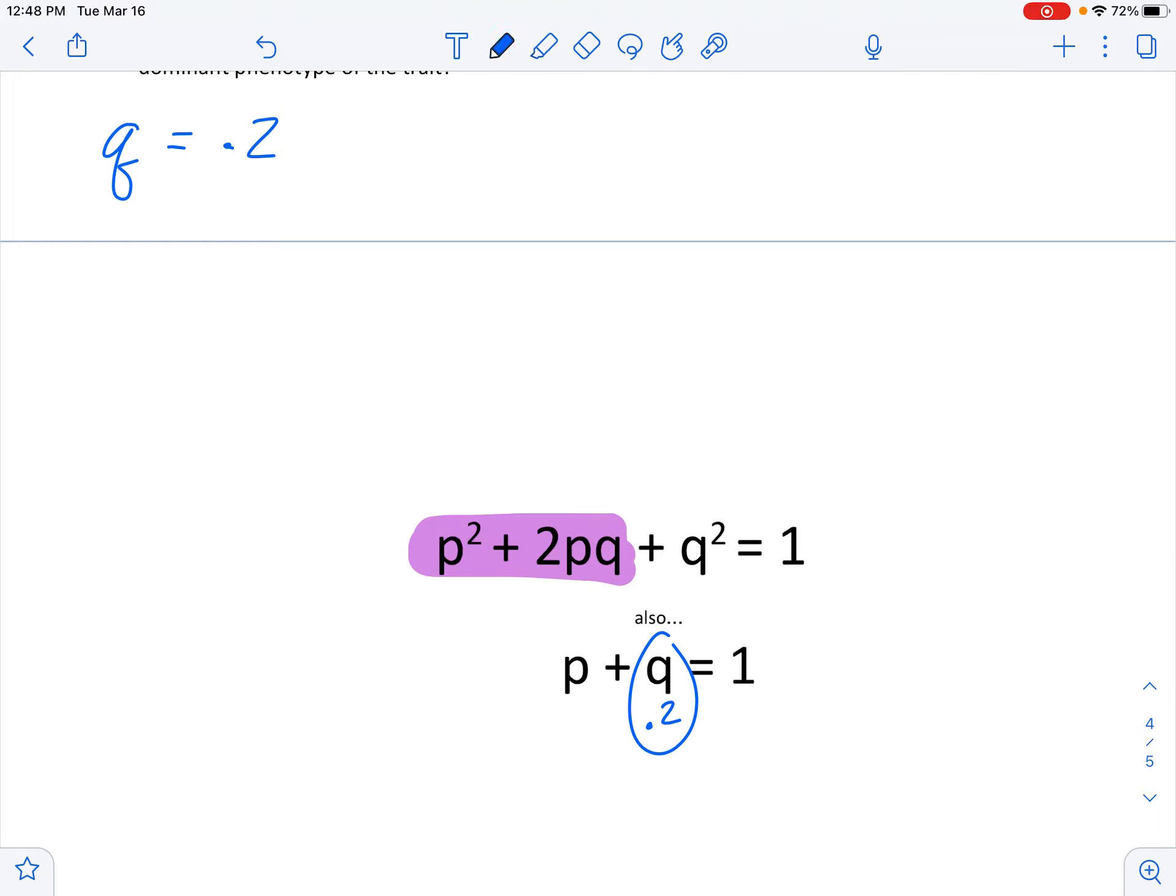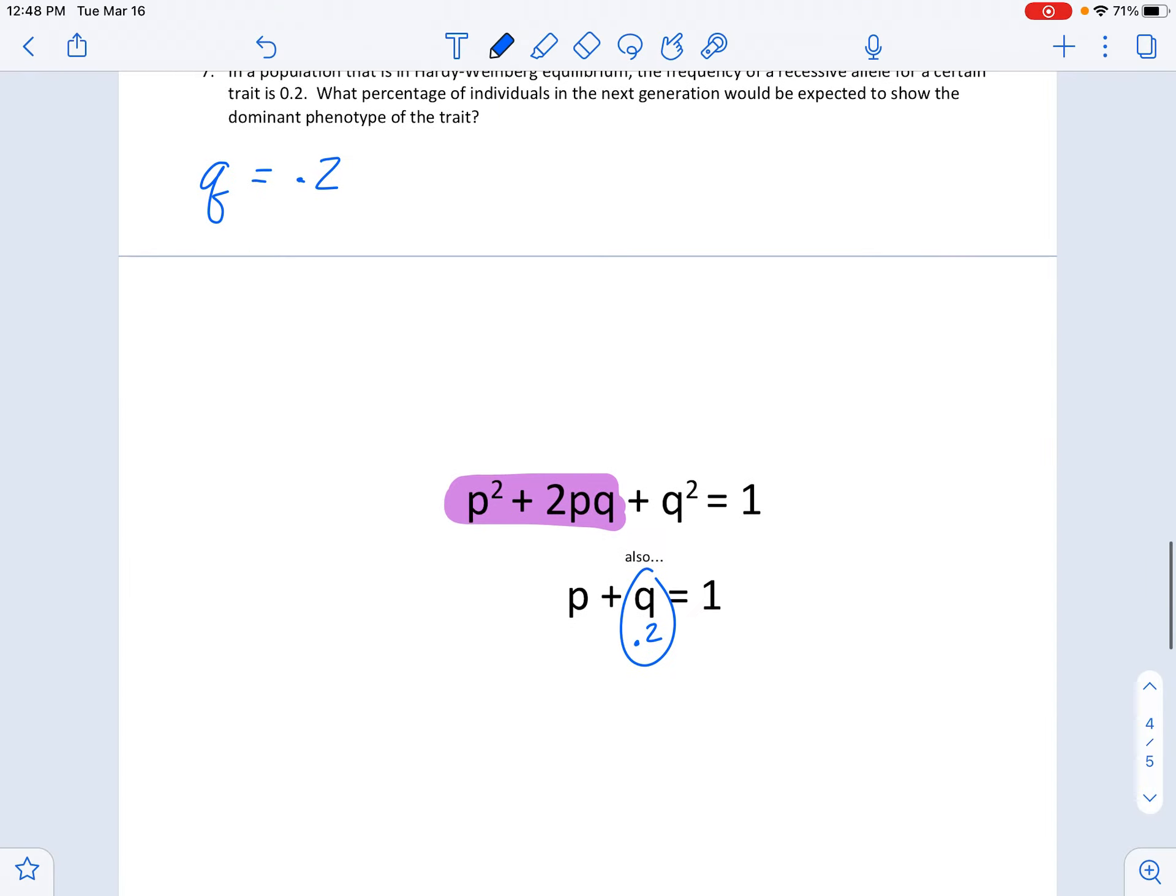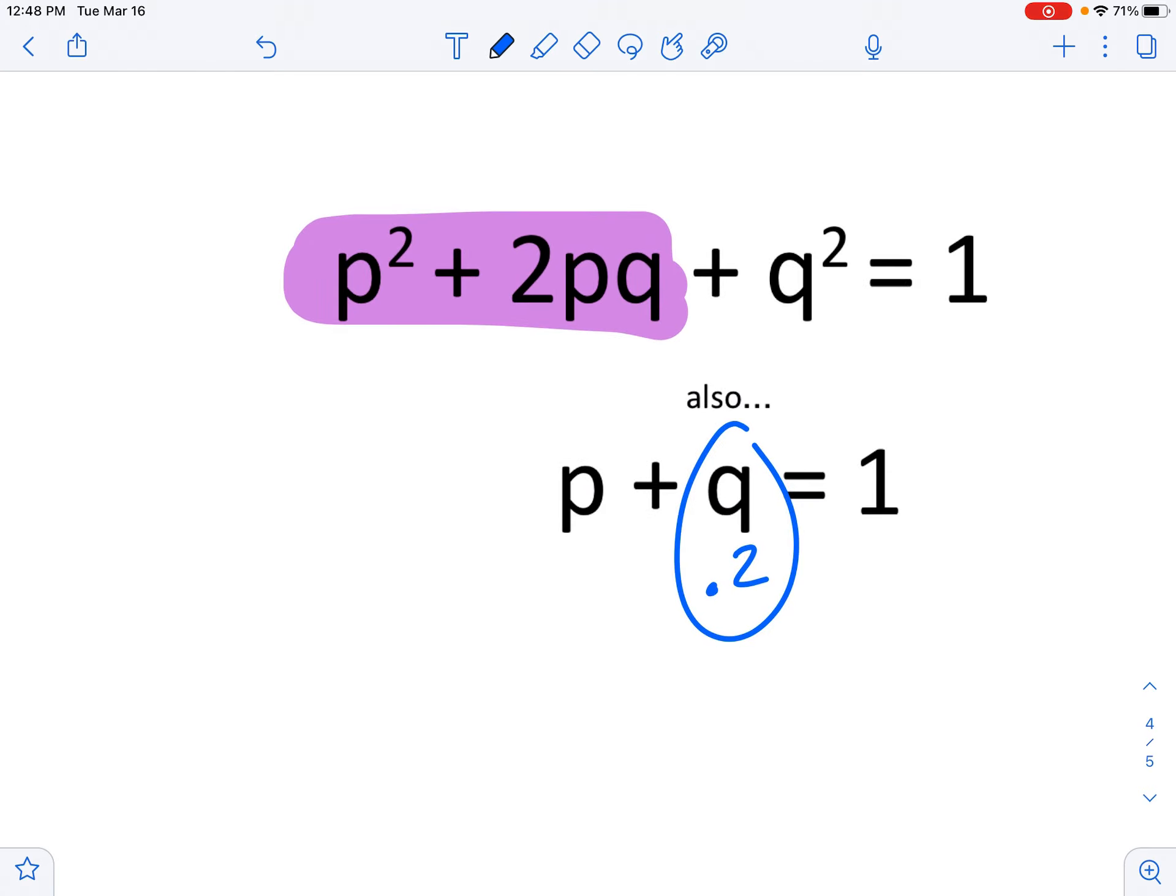So those individuals, p squared and 2pq, because this would be the homozygous dominant, this would be heterozygous. Right? Okay. So that's what we have to calculate.